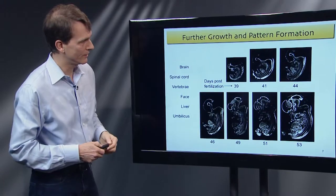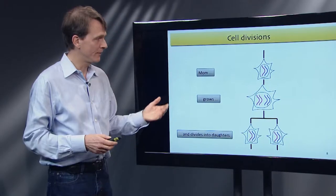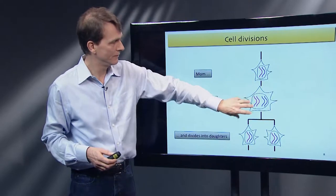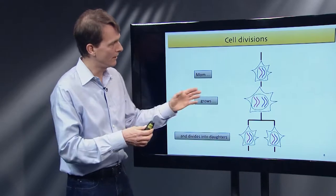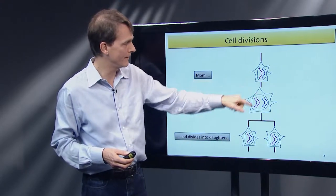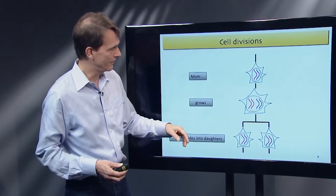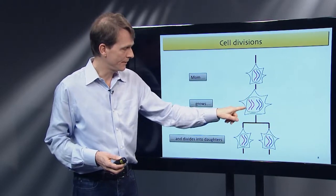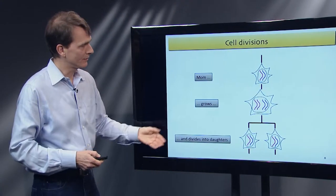Embryonic growth happens via cell divisions. The mother cell grows in volume and then divides into daughters. Here we have chromosomes — one from mom, one from dad — they get duplicated and then segregated into the daughter cells appropriately. The volume of material inside the cell and nucleus also increases, but then gets divvied up in half. That's cell growth and division.